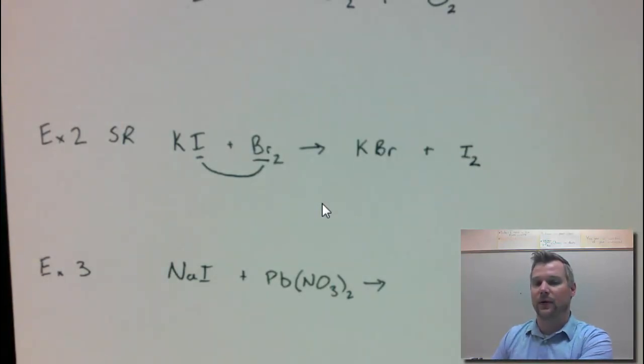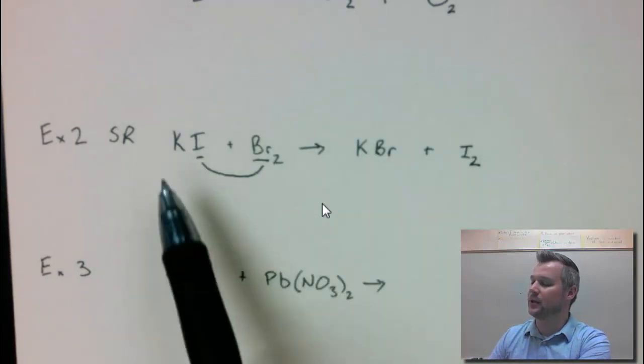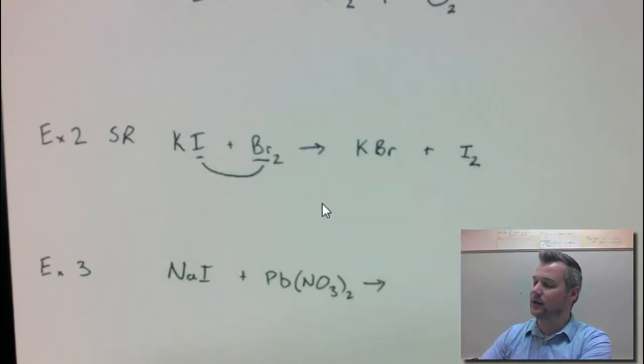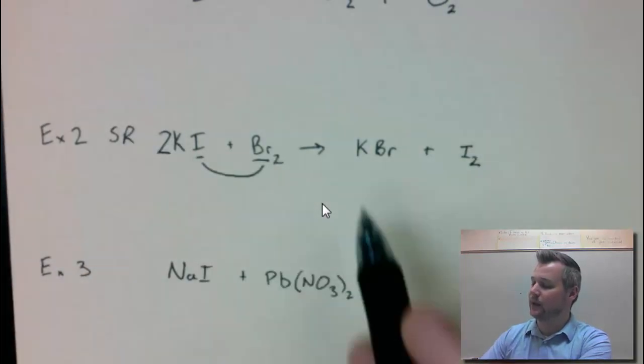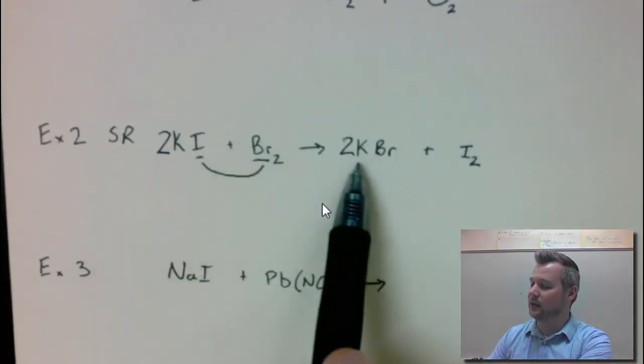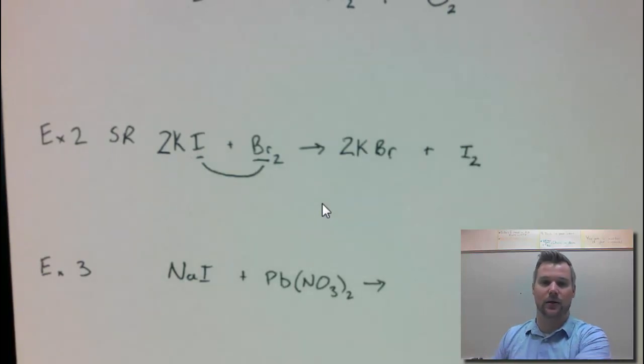Start with your most difficult looking formula. These two formulas are similar difficulty. 1K, 1K. 1I, 2Is. So I need to multiply this KI by 2. And then I need to multiply this one because I just doubled my Ks. 2 bromines, 2 bromines. So we are good to go there.